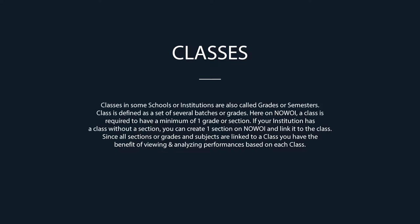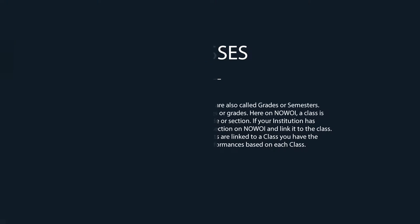Here on Novoi, a class is required to have a minimum of one grade or section. If your institution has a class without a section, you can create one section on Novoi and link it to the class. Since all sections, grades, and subjects are linked to a class, you have the benefit of viewing and analyzing performances based on each class.